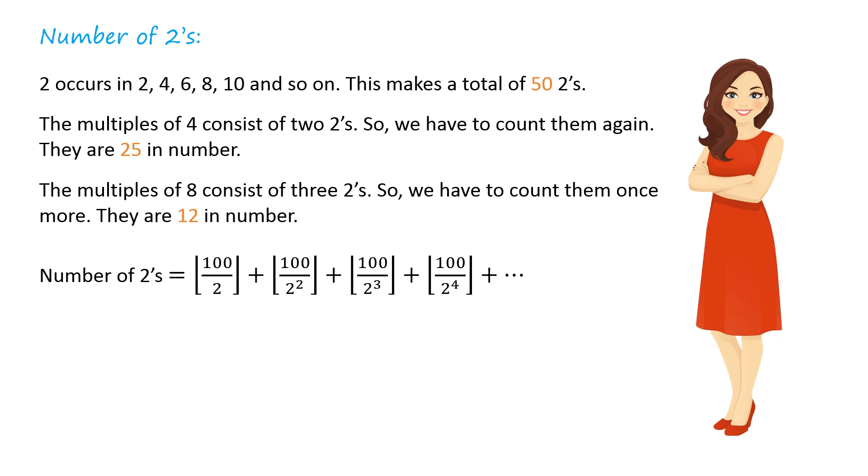The number of 2s equals 100 divided by 2, plus 100 divided by 2 squared, plus 100 divided by 2 cubed, and so on. The brackets imply greatest integer function. This equals 50 plus 25 plus 12 plus 6 plus 3 plus 1 plus 0, which equals 97.